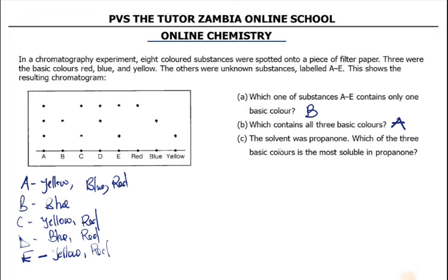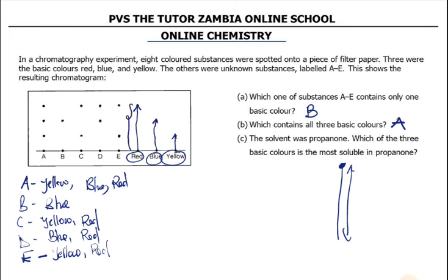They are asking which of the three basic colors — red, blue, and yellow — was the most soluble. The most soluble substance in chromatography is the one that moves to the highest spot, meaning the highest traveling distance. Red has gone all the way up to here, blue has gone up to here, and yellow has gone up to here. The distance for red is larger compared to blue and yellow.